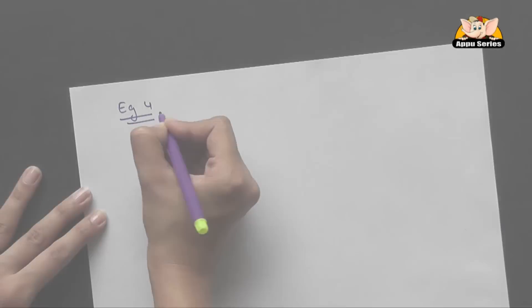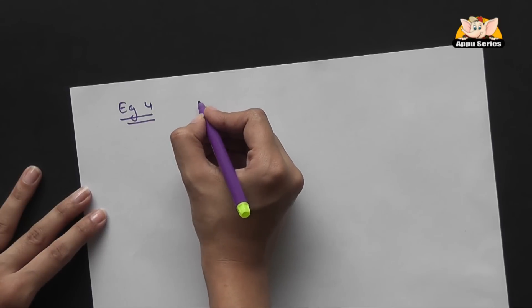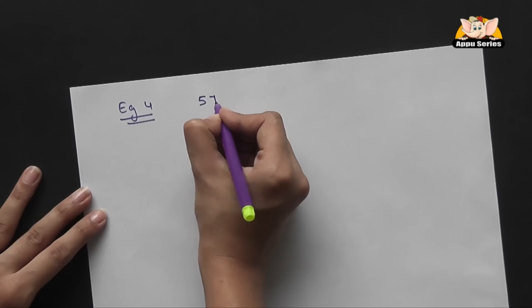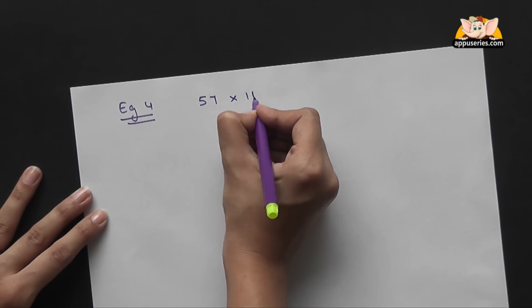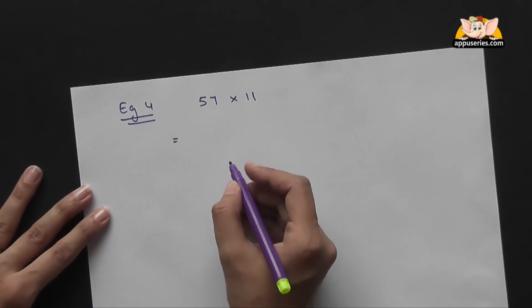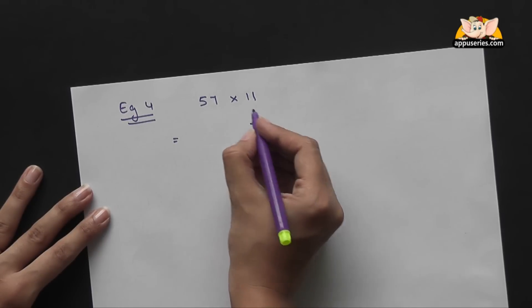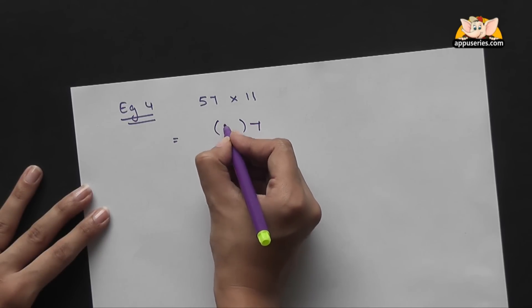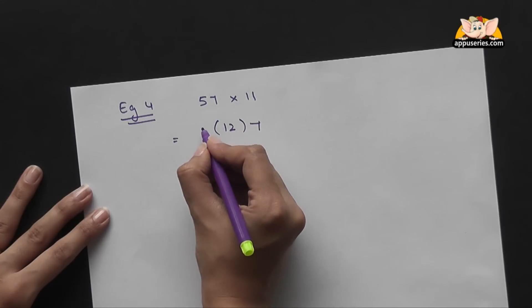Hi, in this video I'll teach you more on multiplication by 11. We'll take 57 into 11. So what do we do here? This 7 we bring down, 5 plus 7 is 12, and this 5 we write it here.